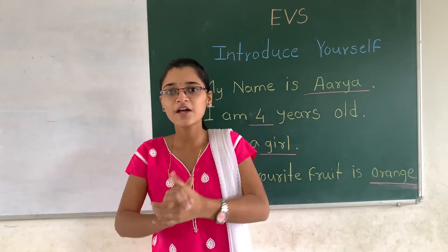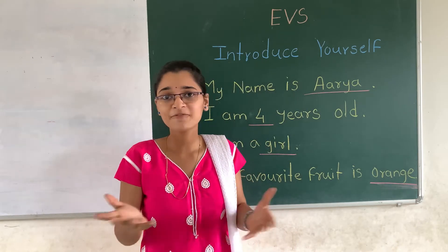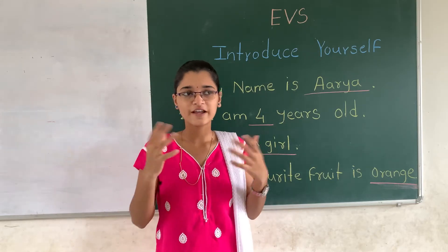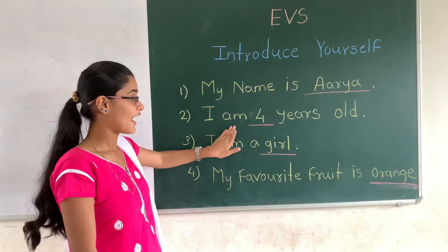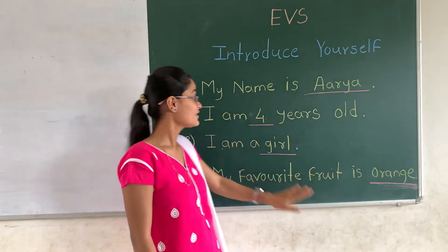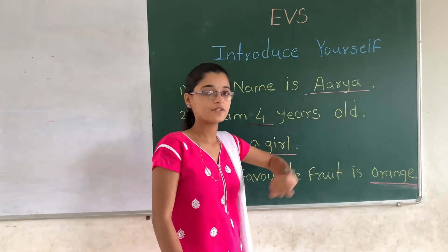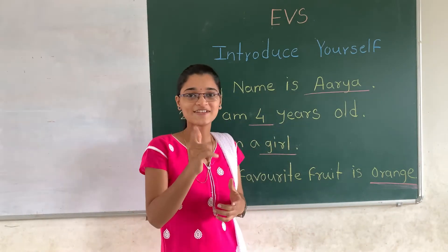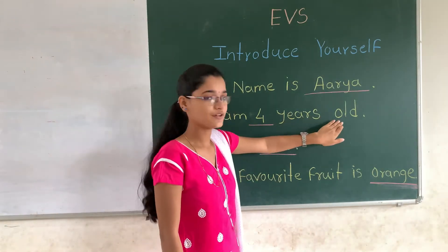Now, how old are you? If your age is 3, then you will say: I am 3 years old. If your age is 4, then you will say: I am 4 years old.